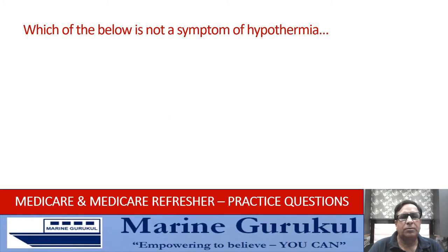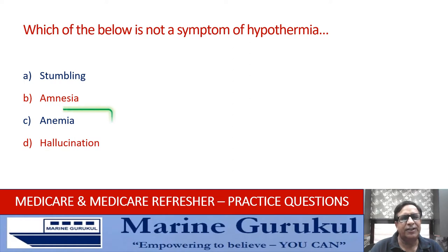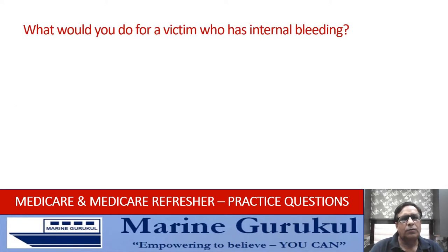Which of the below is not a symptom of hypothermia? Tumbling; amnesia; anemia; or hallucination. The answer is C — anemia, which is related to a blood condition, and therefore is not a symptom of hypothermia.